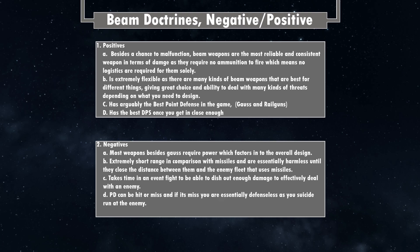Speed lets you close quickly while avoiding hits, and your point defense system needs to be excellent. Negative C: it takes time even in a fight to dish out enough damage to deal with an enemy — unlike missiles' alpha-strike capability, beam weapons need some time before their DPS really becomes worth it. Negative D: point defense can be hit or miss, and if you miss shots you're essentially defenseless as you suicide-run at the enemy. If even a few missiles get through, things cascade and get progressively worse.